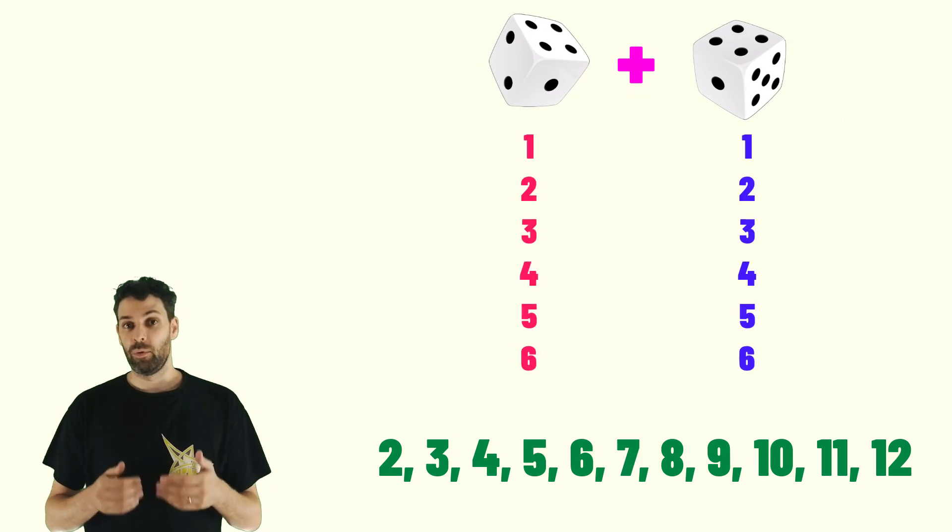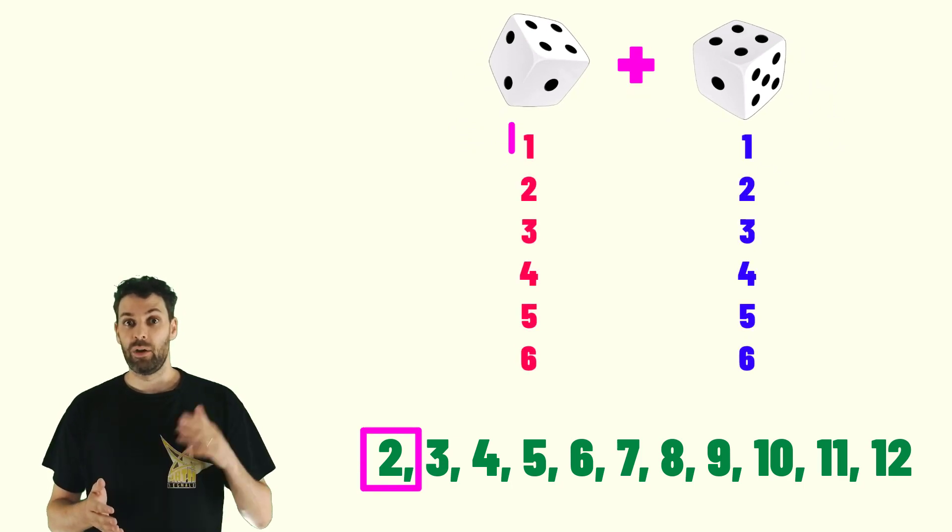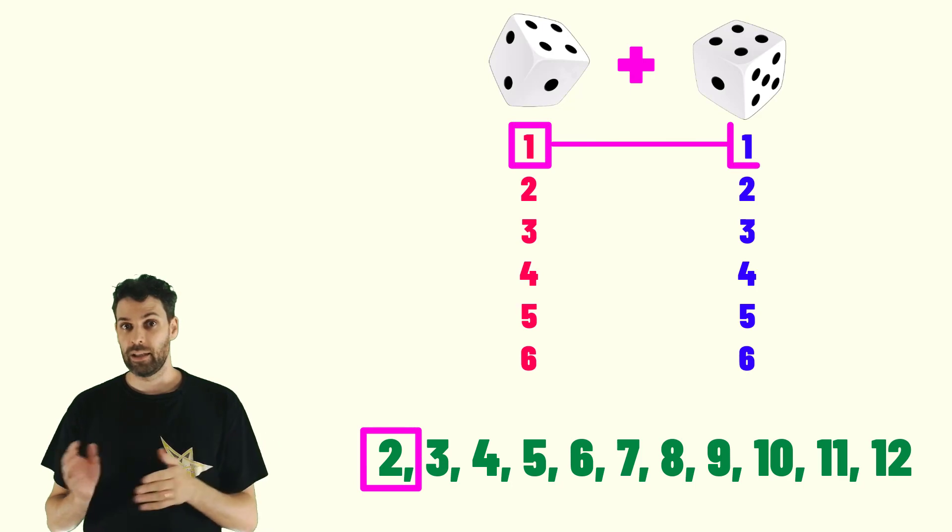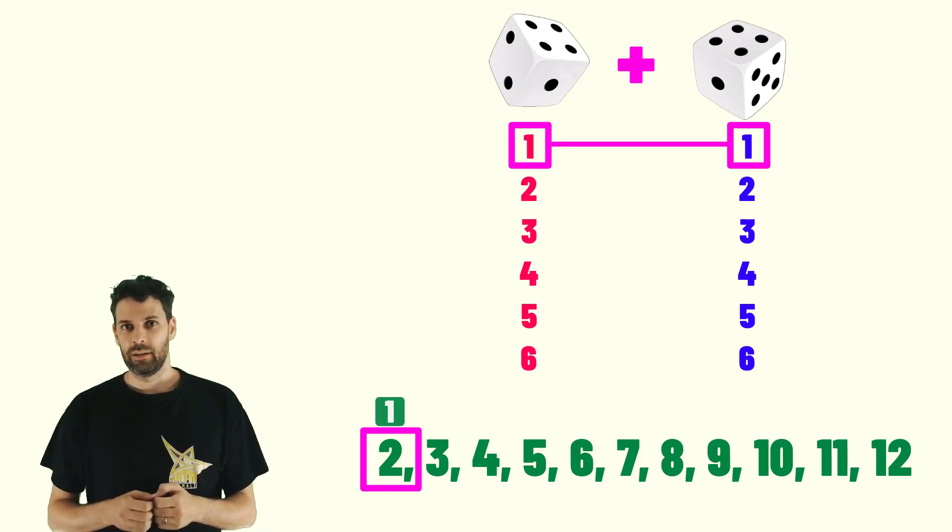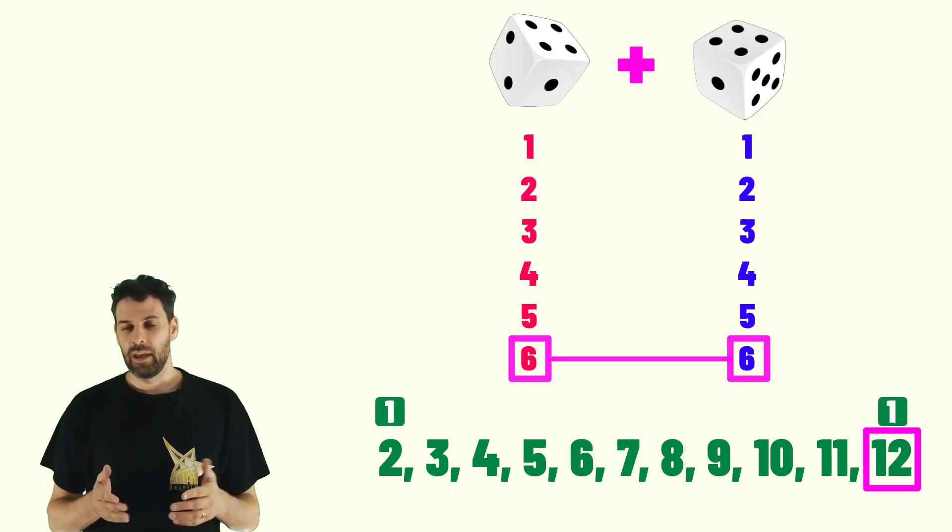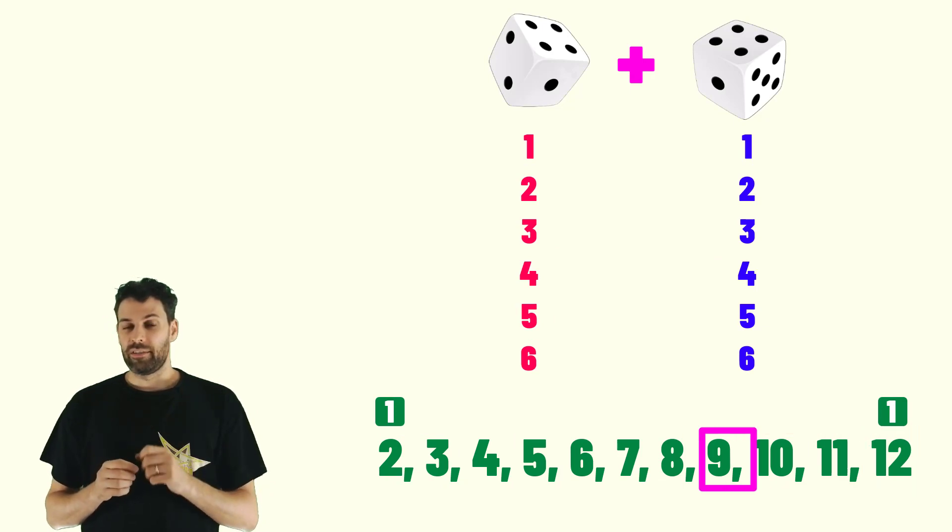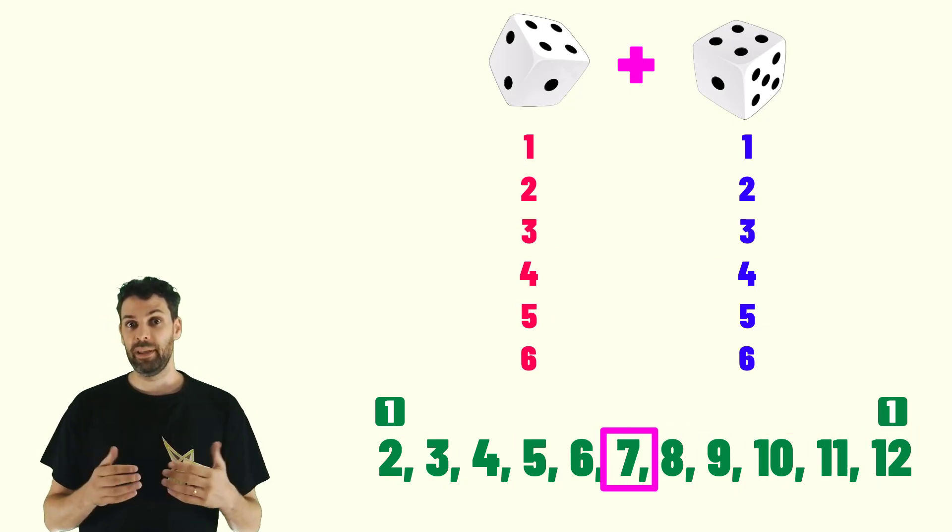Well, you can obtain every number from 2 to 12 but they are not equally probable. For instance, if you want to get 2 you need a 1 on the first die and another one on the second die.